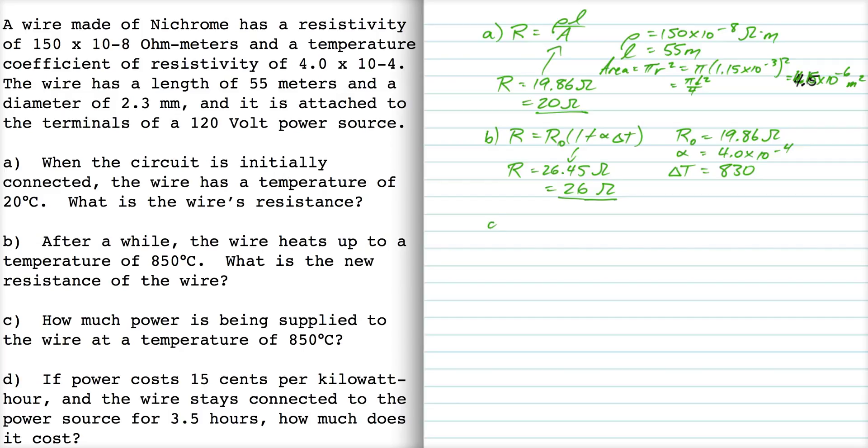Part C, how much power is being supplied to the wire. So in terms of power supply, we use the formula ΔV²/r when it's at that temperature of 850 degrees Celsius.